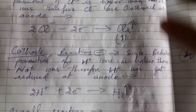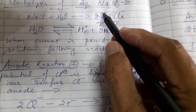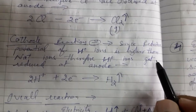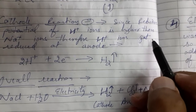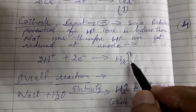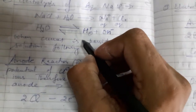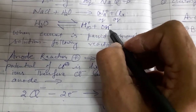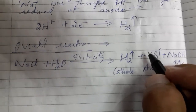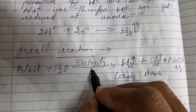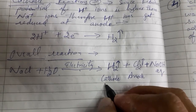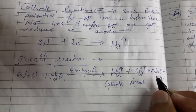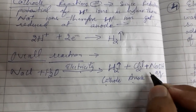Similarly, at the cathode there are two types of positive ions: H⁺ and Na⁺. Out of these two, H⁺ ions have higher reduction potential — that is, a greater tendency to gain electrons than sodium ions. So H⁺ ions gain electrons and change into hydrogen gas. After this, chloride ions have left as chlorine gas, H⁺ ions have become hydrogen gas, and we are left with Na⁺ and OH⁻ ions in solution. Therefore, the overall reaction is: NaCl + water, on passing electricity, gives hydrogen gas at the cathode, chlorine gas at the anode, and an aqueous solution of sodium hydroxide remaining in the electrolytic cell.